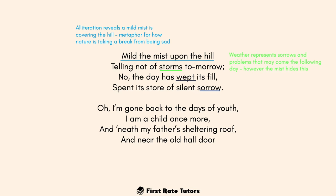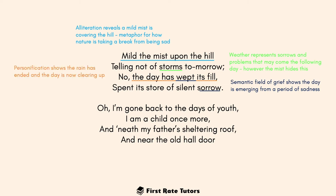We're told that the day has wept its fill and spent its store of silent sorrow. Here we have a semantic field of grief — 'wept' and 'sorrow' — and the day is personified as weeping and having sorrow, showing that the day is emerging from a period of sadness. This could reflect the narrator themselves emerging from sadness. Contextually, Emily Brontë had lost two sisters, so this may extend to her own mourning. The use of sibilance — 'spent', 'store', 'silent', 'sorrow' — creates an atmosphere of silence and a quiet, sombre mood established in the first verse.